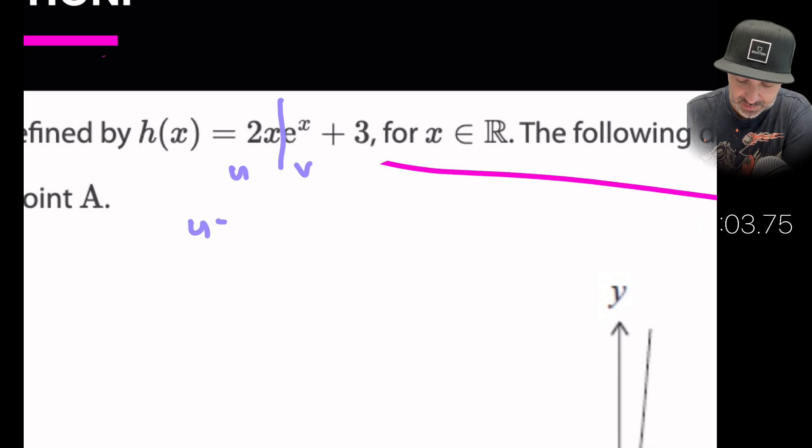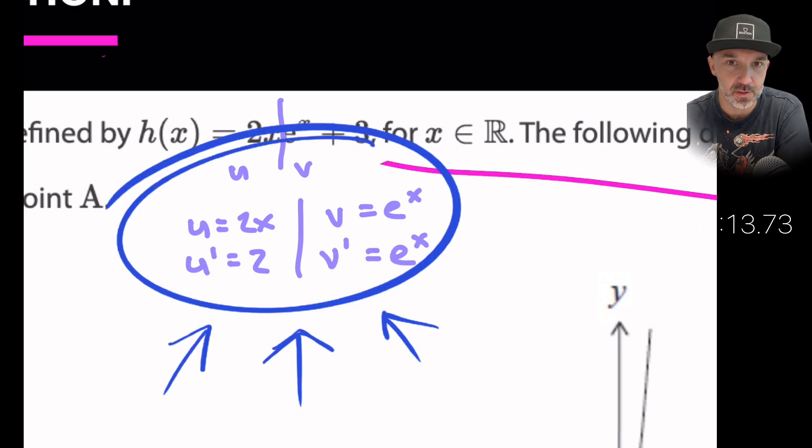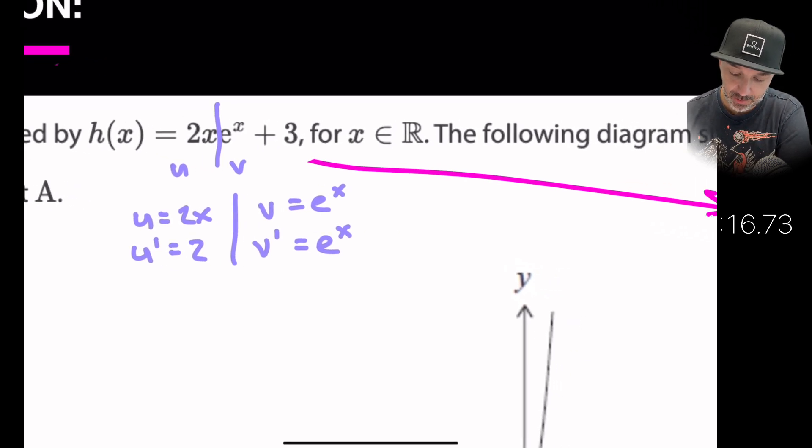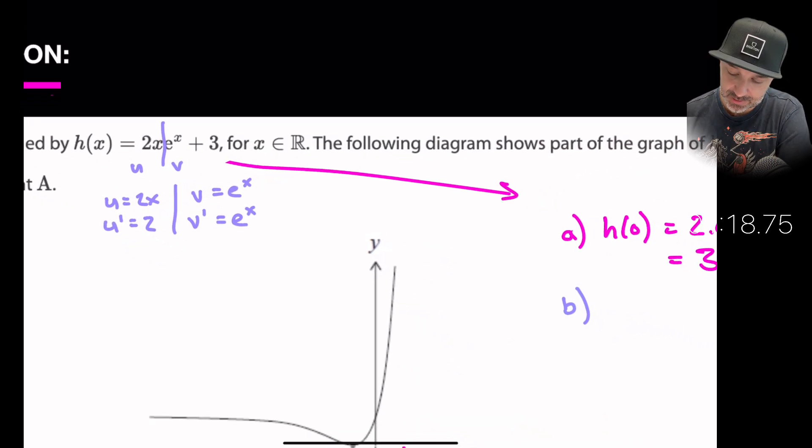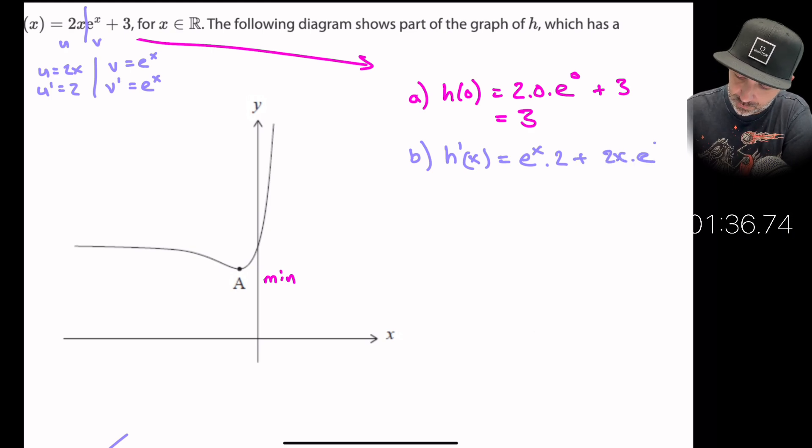So u is equal to 2x, u prime then is equal to 2. We've got v is equal to e to the x and v prime is also equal e to the x times one. Don't forget to times by the derivative of the power in case it wasn't just x. So go ahead and substitute all of that in here. So h prime of x is the product rule so v du, so e to the x. Du is just two plus u which is 2x times the derivative of v which was e to the x. Now that's actually the answer.